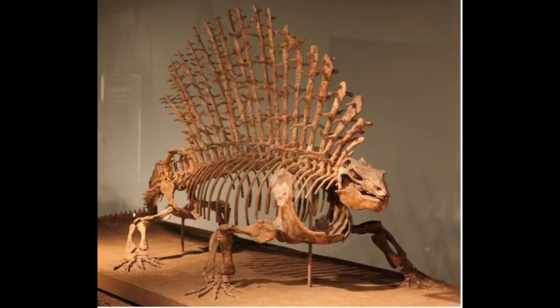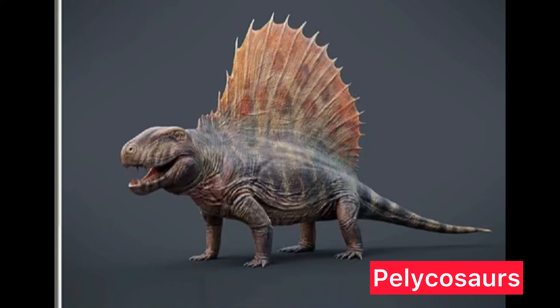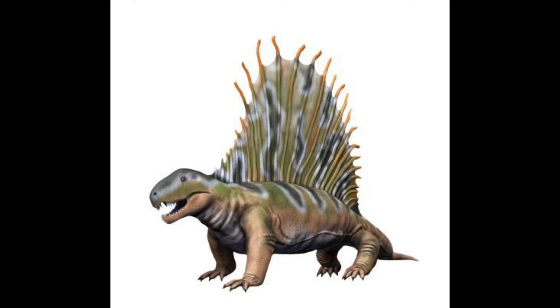Among these early amniotes were the synapsids, distinguished by a single temporal fenestra, an opening in the skull behind each eye. The earliest synapsids, known as pelicosaurs, emerged around 320 million years ago in the late Carboniferous. Pelicosaurs were primarily reptilian in appearance and behavior. Notable genera include Dimetrodon and Edaphosaurus, recognized for their distinctive sail-like structures along their backs, supported by elongated vertebral spines.